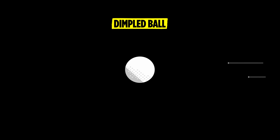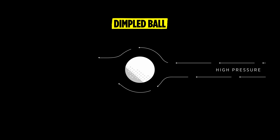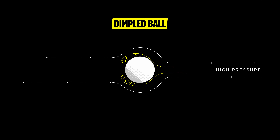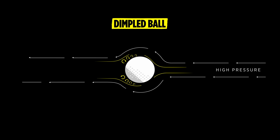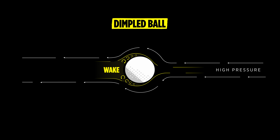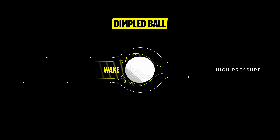What golf ball dimples do is allow you to transition from laminar flow — where air flies straight off the back — to a turbulent flow. The air hits the front edge of the golf ball and the dimples energize that air, creating a turbulent boundary layer. Because of that, the air will, instead of flying off the top edge of the golf ball, actually stick to the back of the golf ball before it releases.